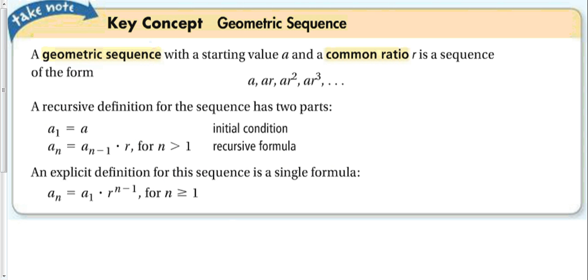So a geometric sequence starts with the value of a and has a common ratio of r, and it looks like the first term is a, then a times r, then a times another r to give us r squared, then a times another r to give us r to the third power.